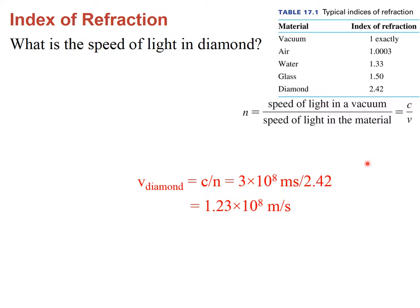What is the speed of light in diamond? It's relatively simple: the speed is c divided by n. So it is 3×10⁸ divided by 2.42, which gives the speed of light inside a diamond.